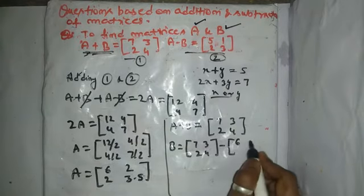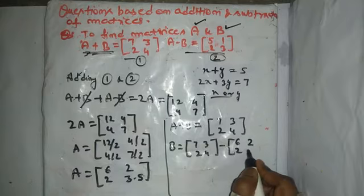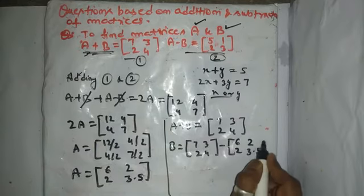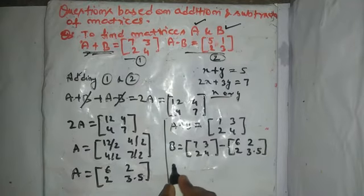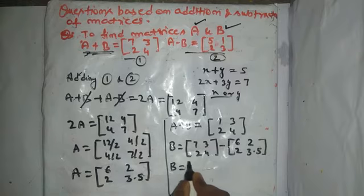Matrix A is 6, 2, 2, 3.5. Right? Now, B is equal to what you got?